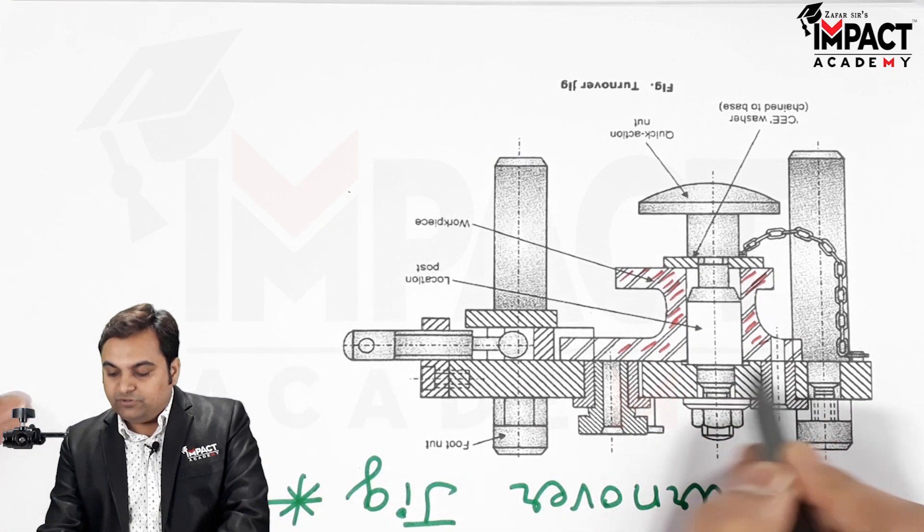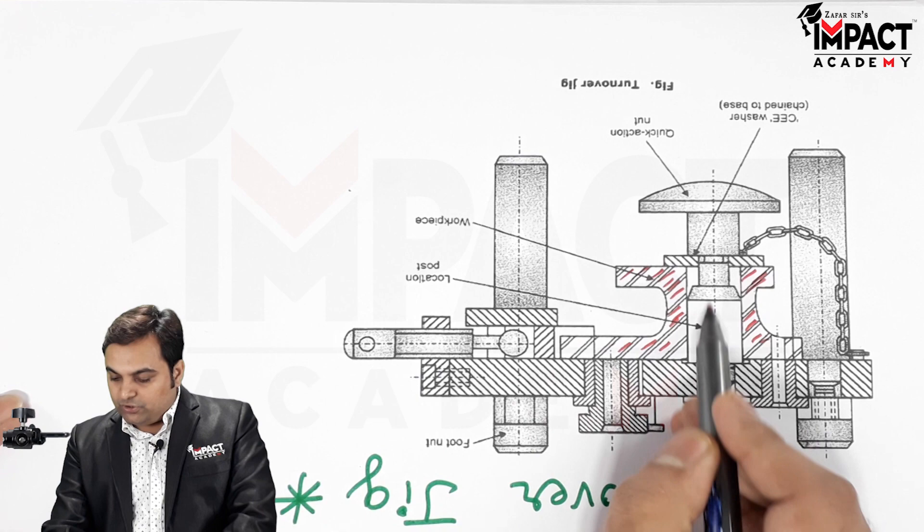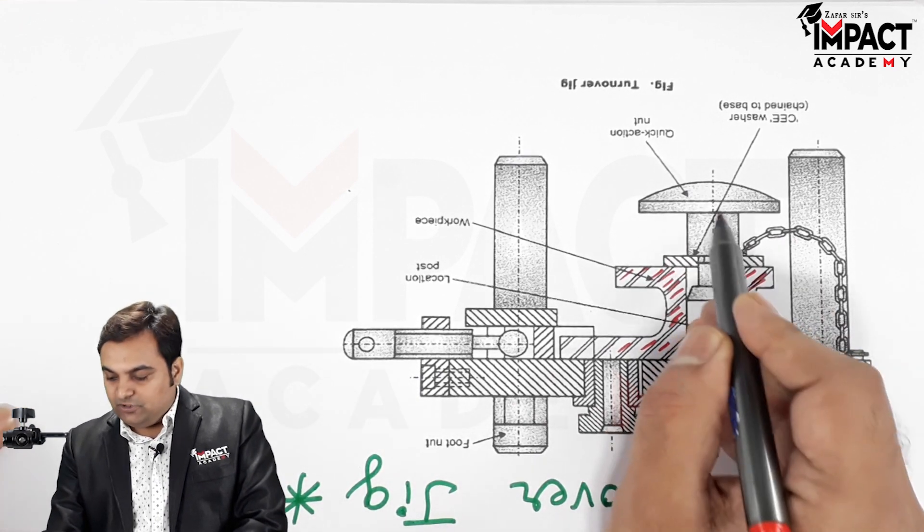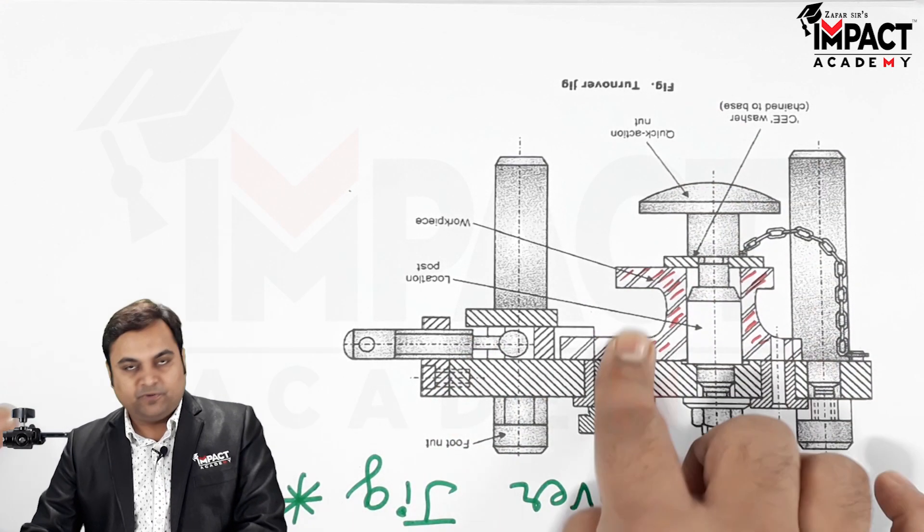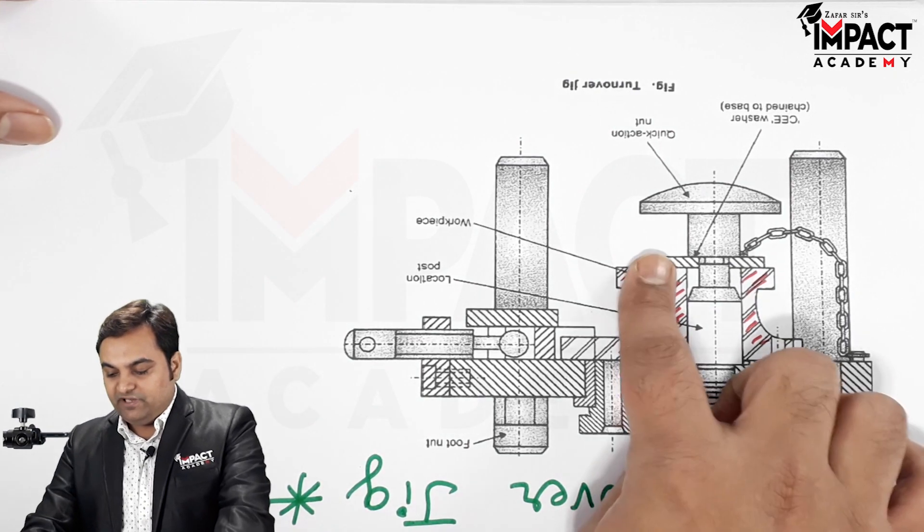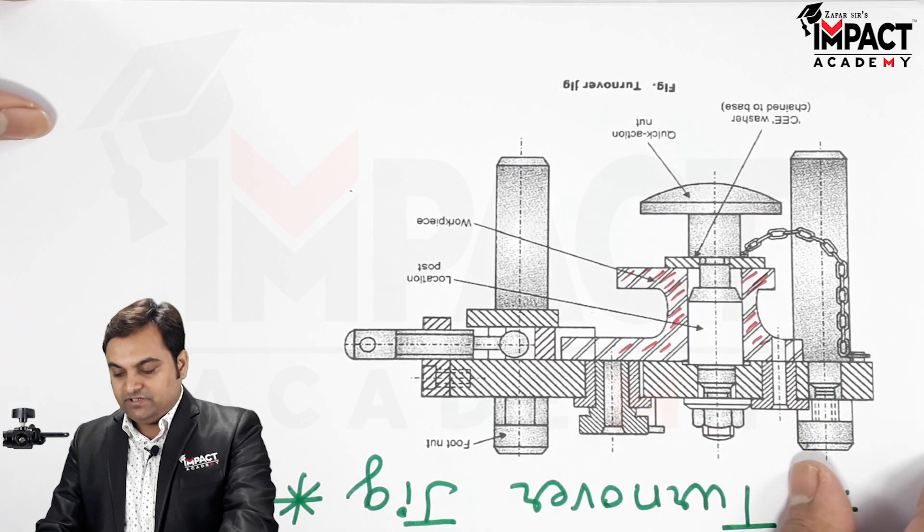Here we have this workpiece. Now this workpiece is kept on this jig body. After keeping the workpiece over here on the location post, then the seawasher is attached and the quick action nut is tightened. So the workpiece is fixed in this proper position.